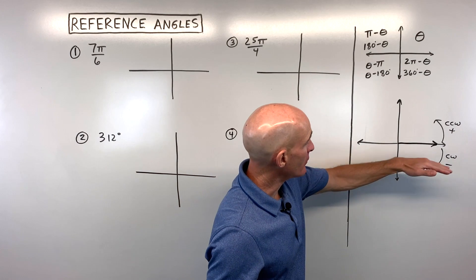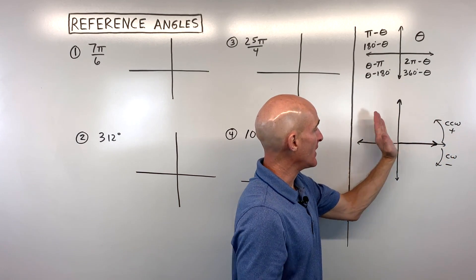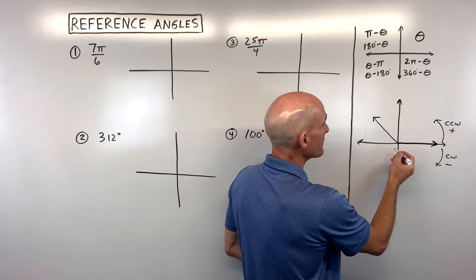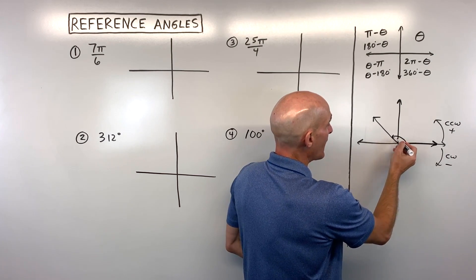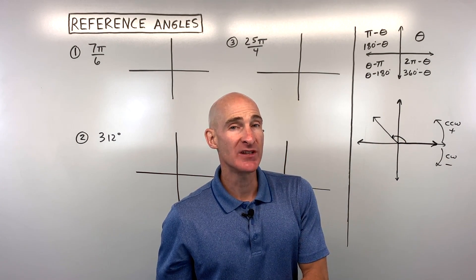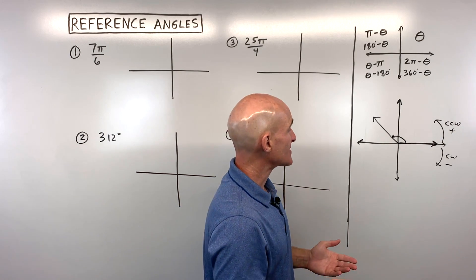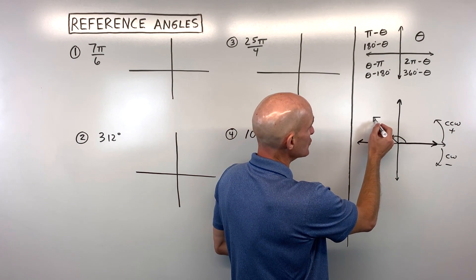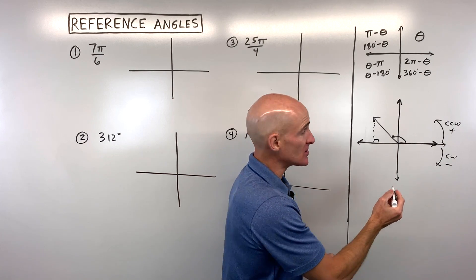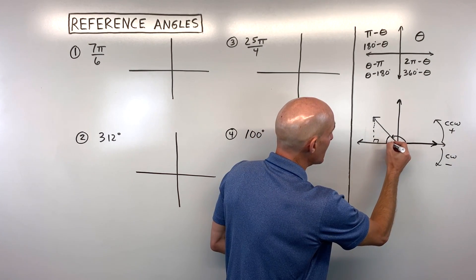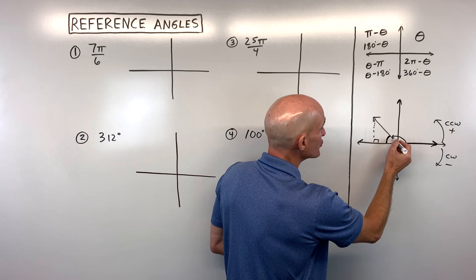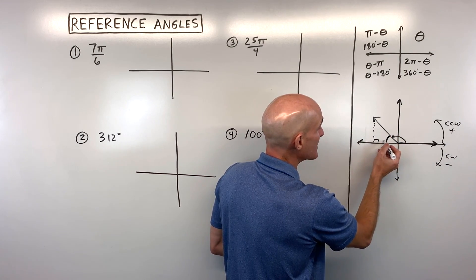Just like a spinner, eventually it's going to stop or terminate. Say it terminates right here — this is what we call our angle of rotation. Where the reference angle comes in is wherever that terminal ray stops, you want to drop a perpendicular to the x-axis.